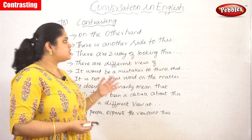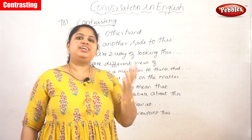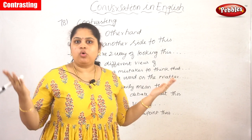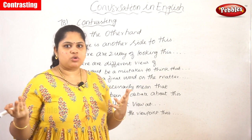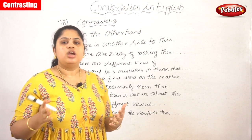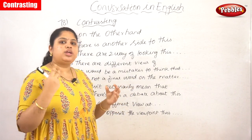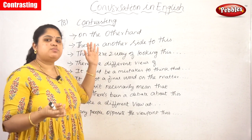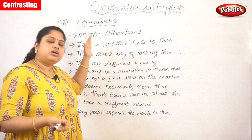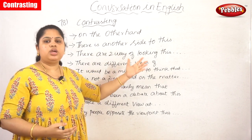The next set of sentences is about contrasting - contrasting means having an opposite opinion. Everybody will think in their own way, so whatever your thought was doesn't necessarily match with others. There will be different kinds of opinions, so if you want to tell a different opinion, you can do that by contrasting. You can open up your speech with a contrasting opinion using these sentences.